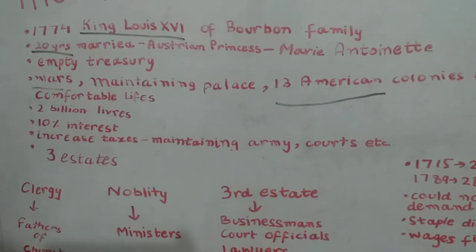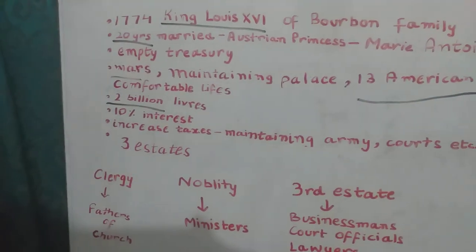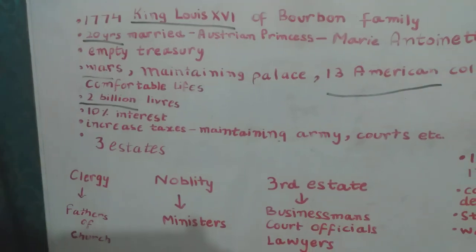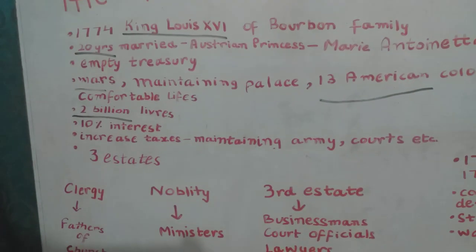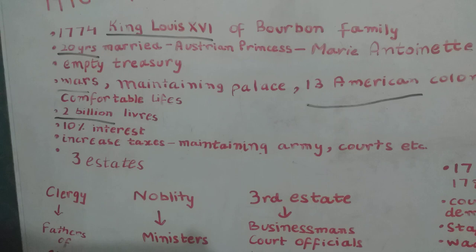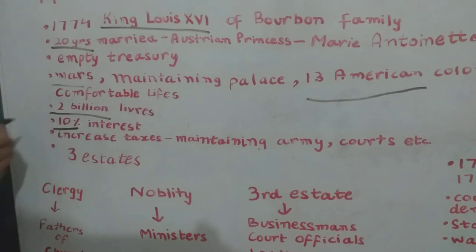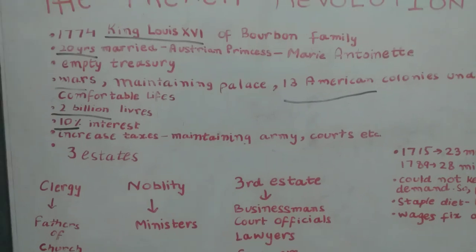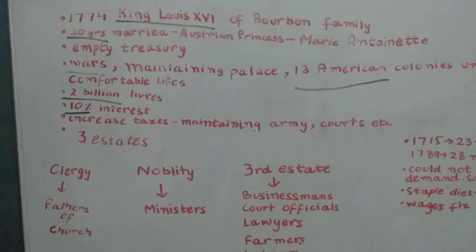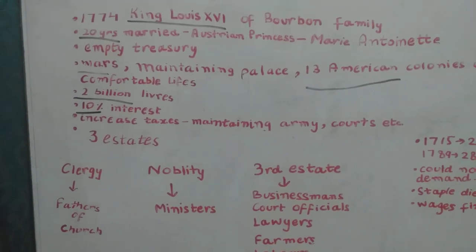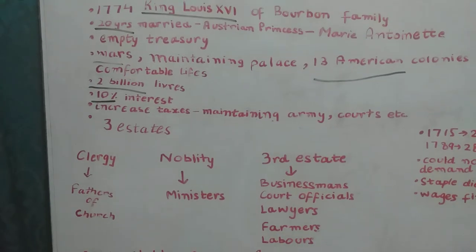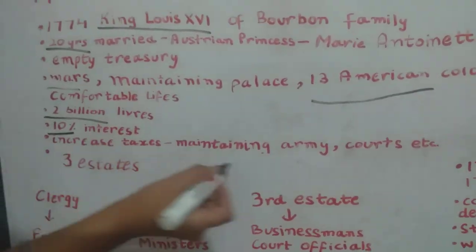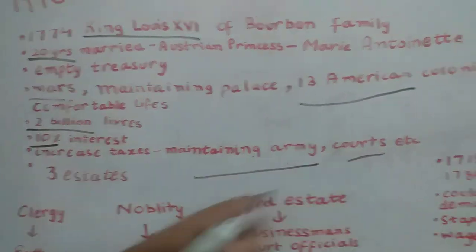As a result, France accumulated a debt of 2 billion livres — the livre being the currency. The lenders who provided money at that time charged 10% interest. The king then thought it was necessary to increase taxes to pay off the debt, maintain the army, and run the courts.